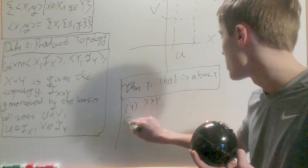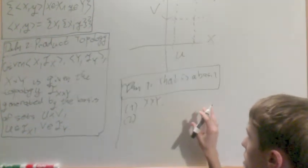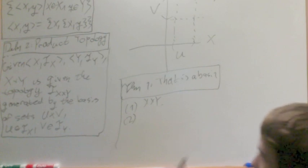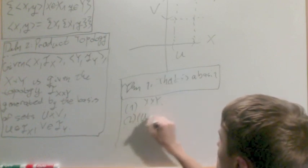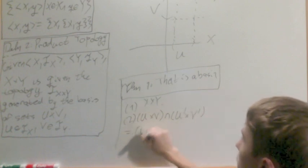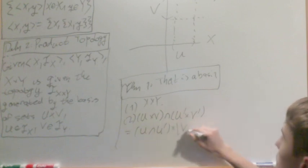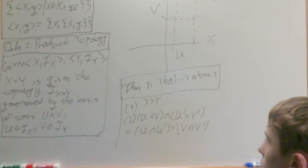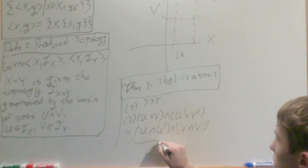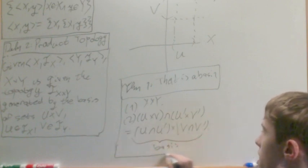Two is going to be between any two basis elements, the intersection of them contains another one. Well, if I'm doing U cross V intersect U prime cross V prime, this is actually equal to U intersect U prime cross V intersect V prime, as you can prove set theoretically. And so this, of course, is a basis element because finite intersections of open sets.